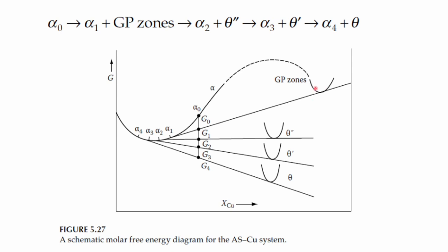The transformation sequence can go from alpha-0 to alpha-1 plus GP zone, then to alpha-2 plus theta double prime, alpha-3 plus theta prime, and finally theta phase, which is the thermally stable structure in terms of free energy. From GP zone to theta phase, you decrease the free energy. Each phase — GP zone, theta double prime, theta prime, theta — is balanced with its corresponding alpha phase. From alpha-1 to alpha-4, you decrease the copper concentration in the alpha phase system.